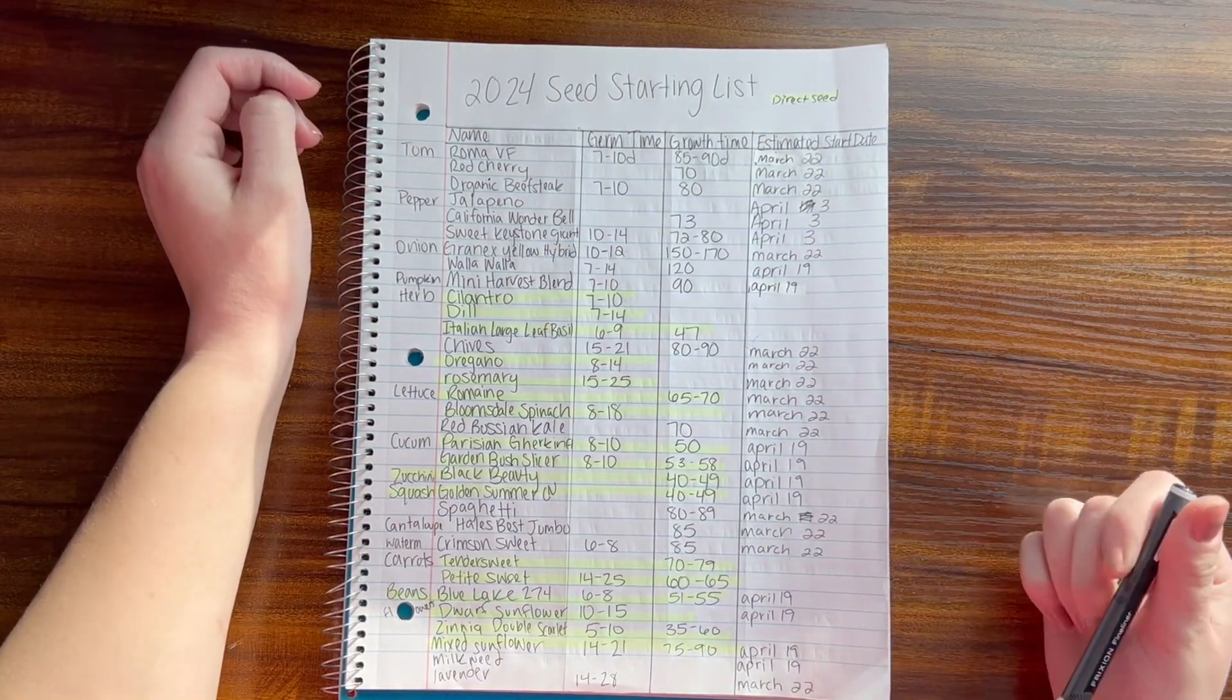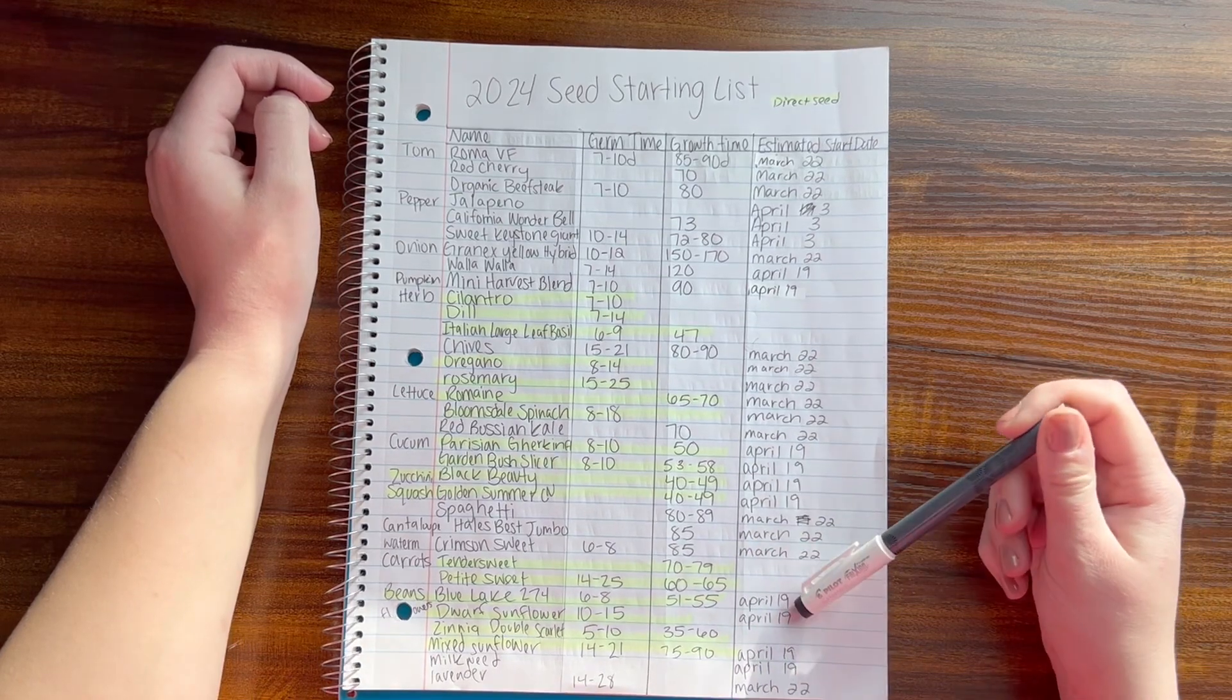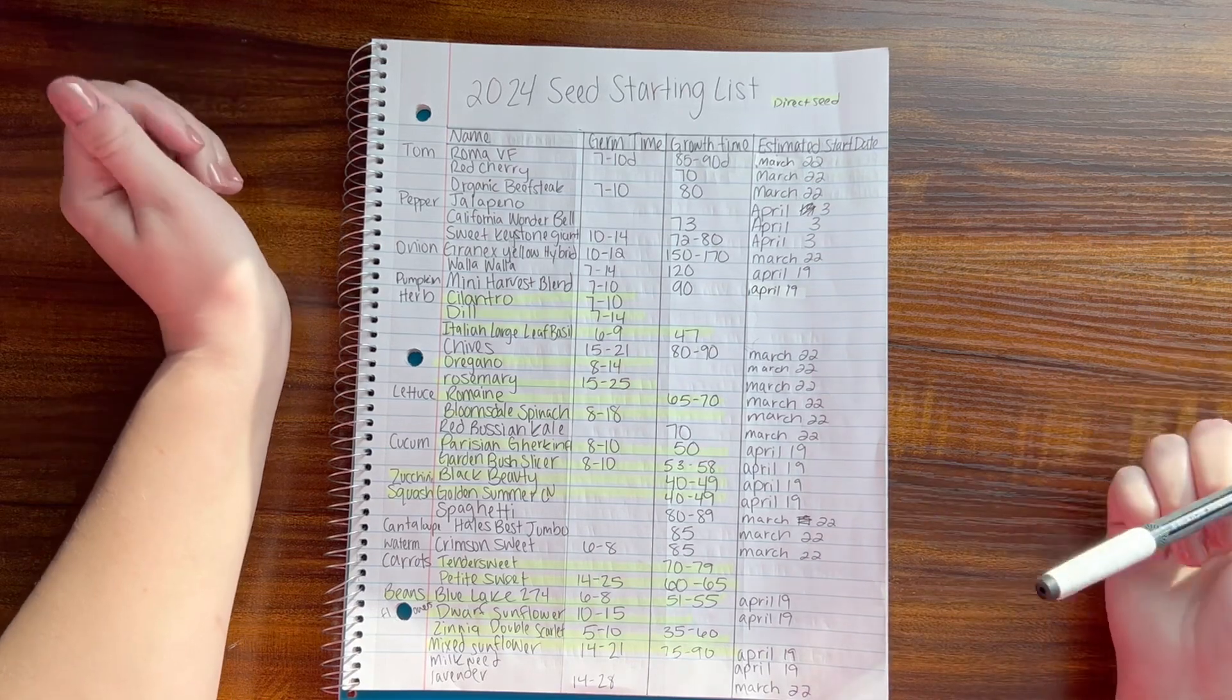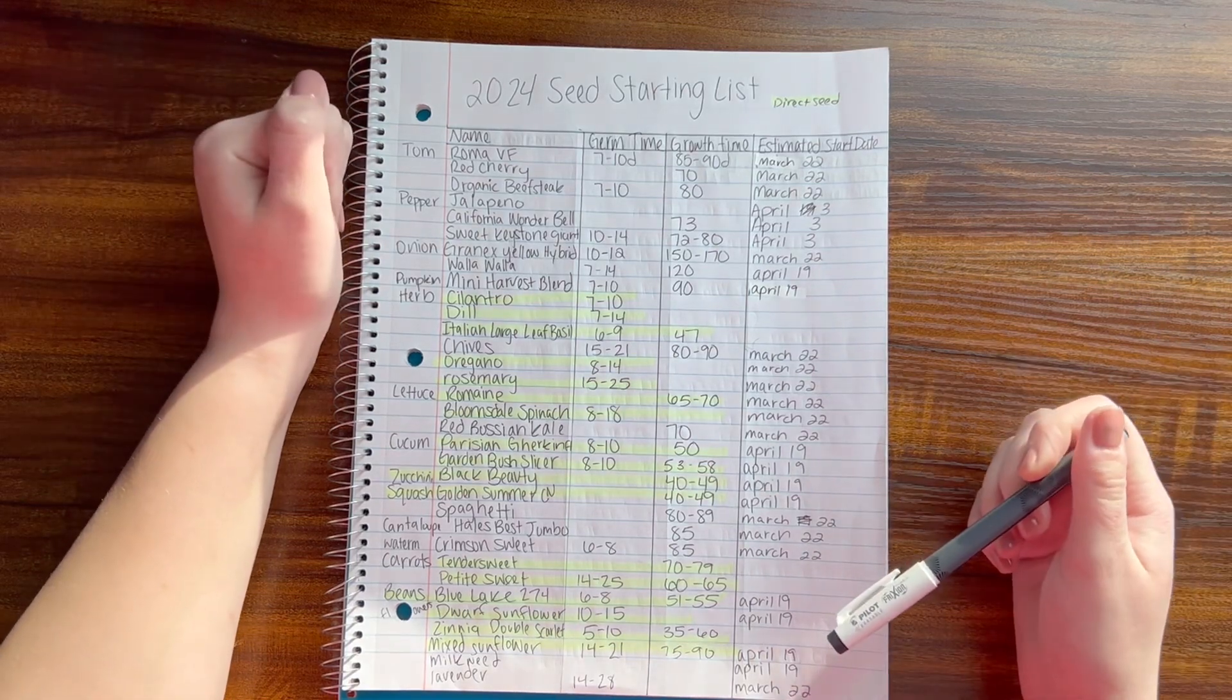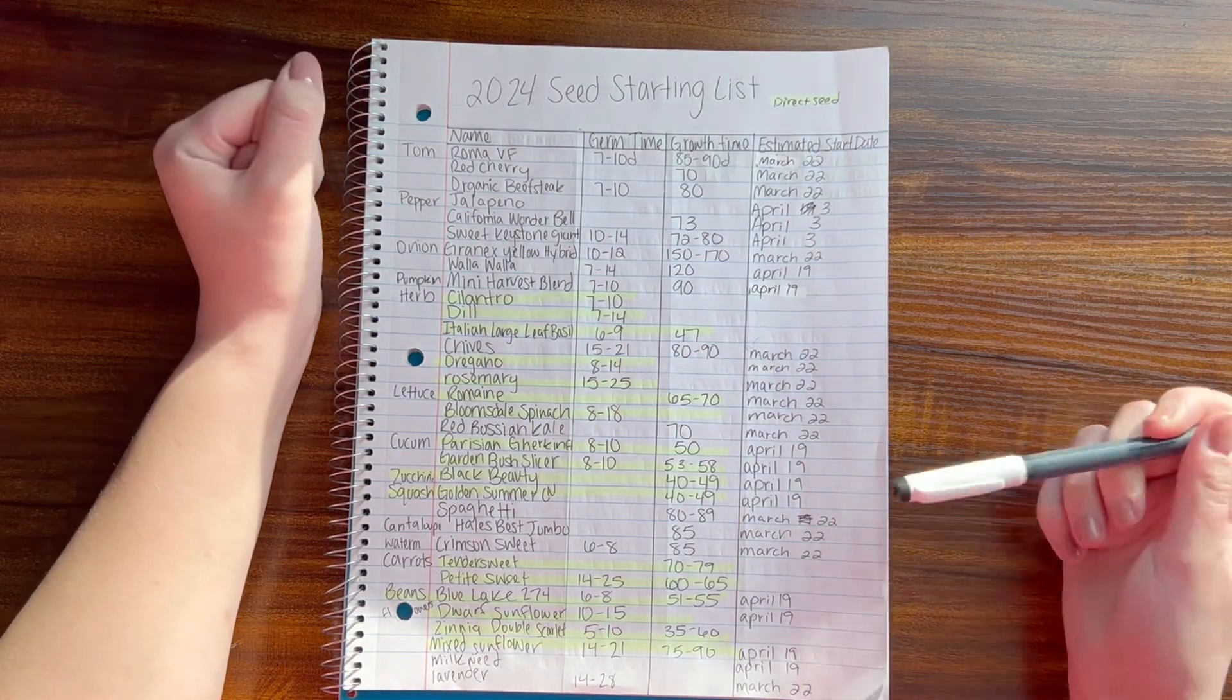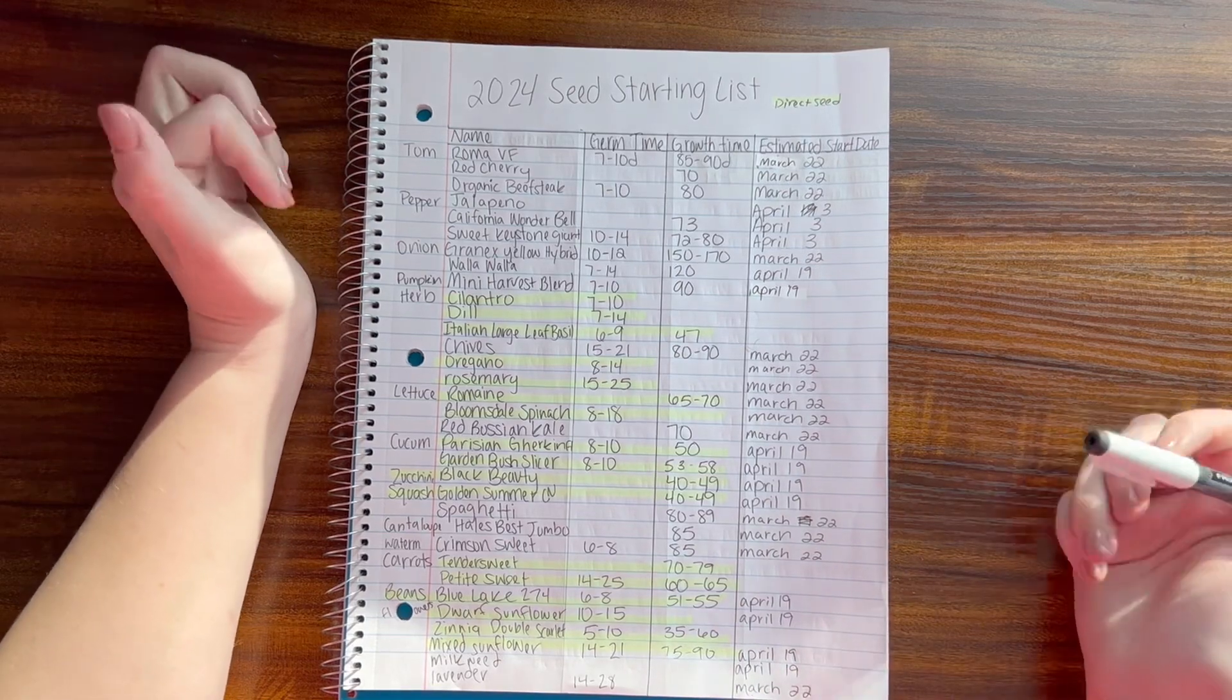For beans, I'm going to do the Blue Lake green beans, and I am going to try and sow them every two weeks. So I'll start some inside on the 19th, and then two weeks later I might start them inside or I might, when I plant them outside, plant seeds outside as well next to it.